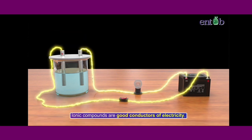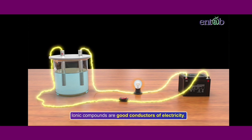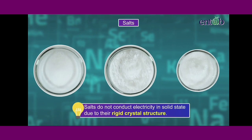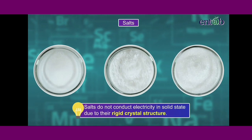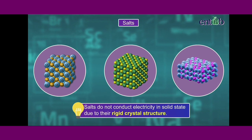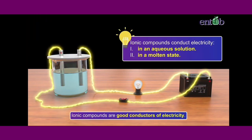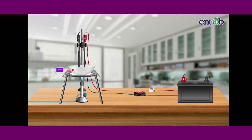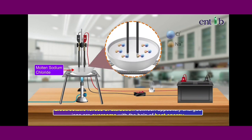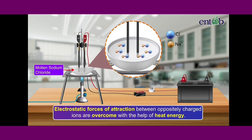Hence the ionic compounds are good conductors of electricity. But remember always that salts do not conduct electricity in the solid state due to their rigid crystal structure. But the ionic compounds conduct electricity when in a molten state because in the molten state the electrostatic forces of attraction between oppositely charged ions are overcome with the help of heat energy.